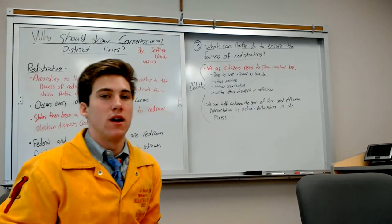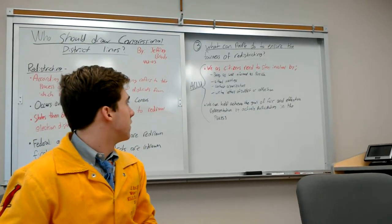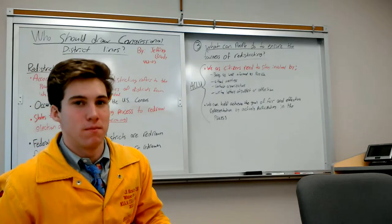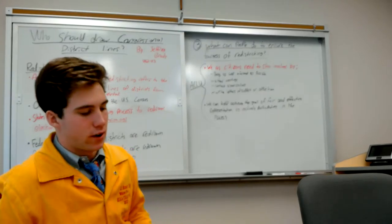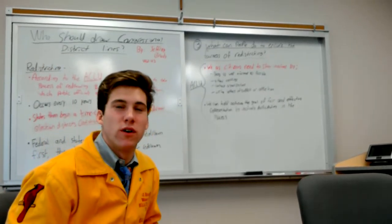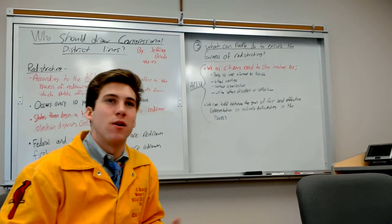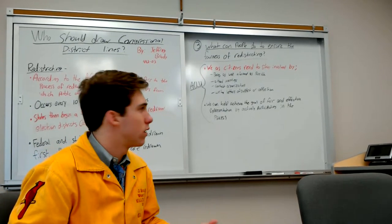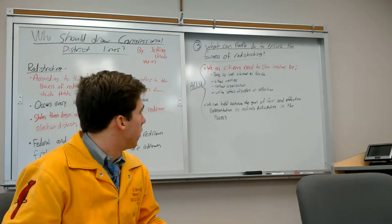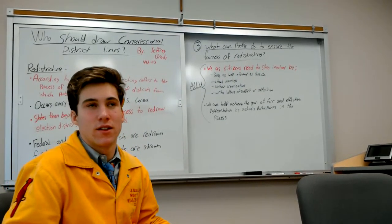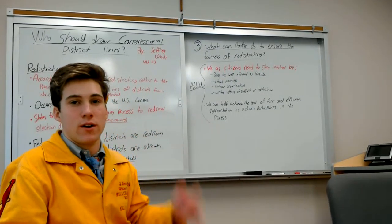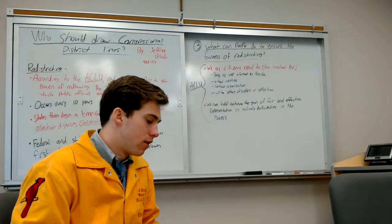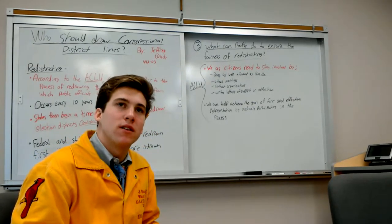Now third, what can people do to ensure the fairness of redistricting? We as citizens need to stay involved. That's the number one way that we can affect how these lines are drawn. We can stay involved by being as well informed as possible. There are many different websites to go to that will inform you of what redistricting is or different websites that tell you the new plans.